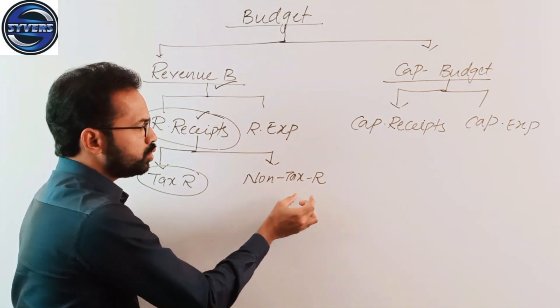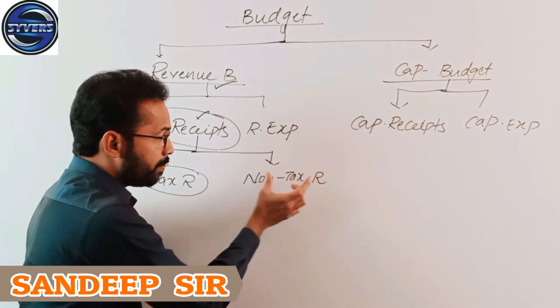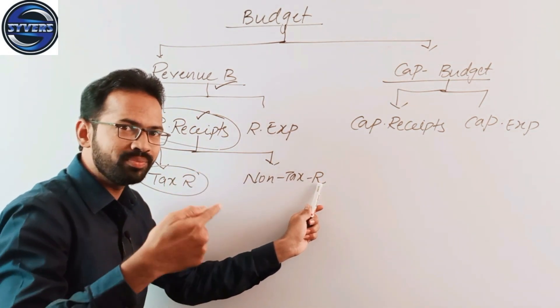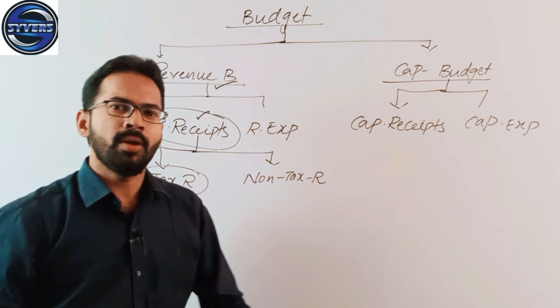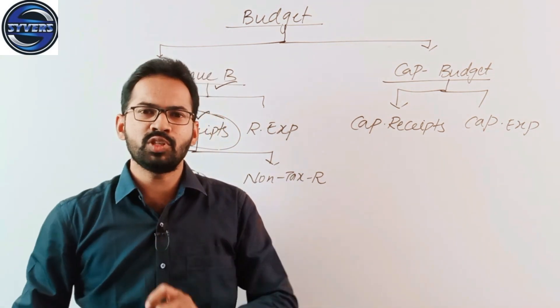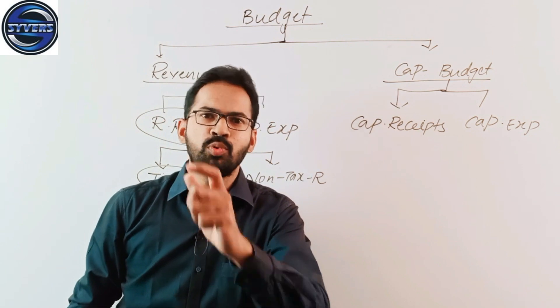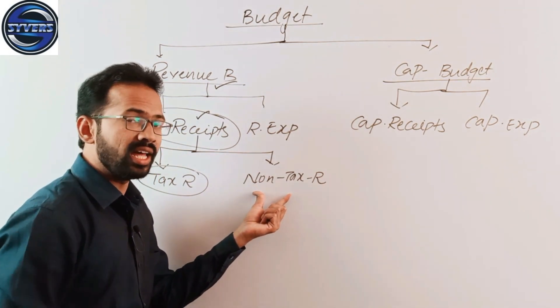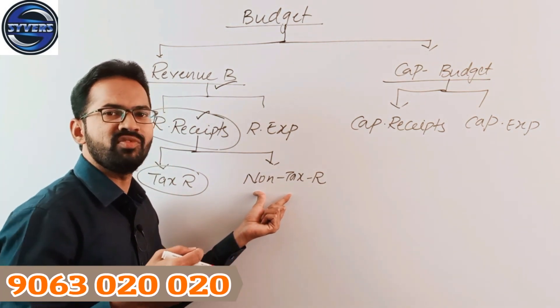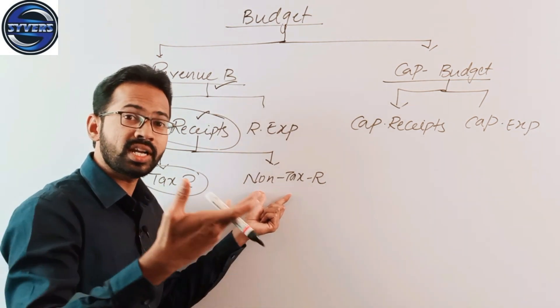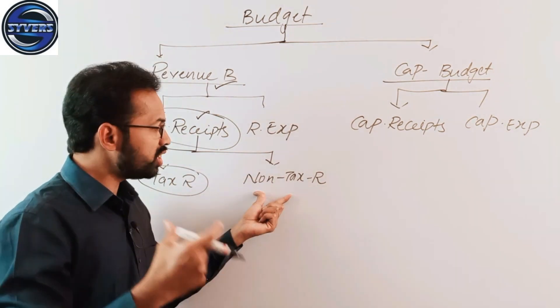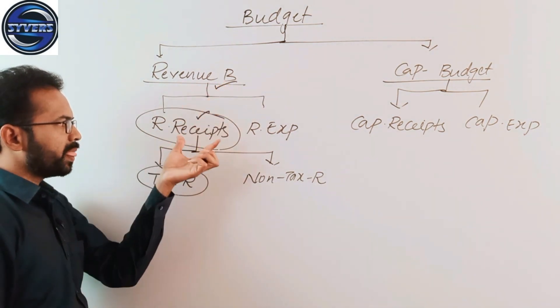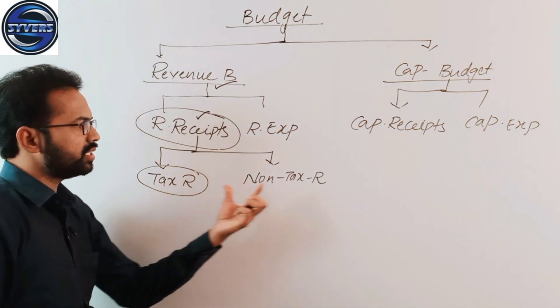Non-tax receipts should be a receipt that is recurring in nature but should not be a tax. Examples include fines, fees from tourism, temples, transportation, profits, and interest. These are regular income but not tax, so they fall under non-tax receipts.